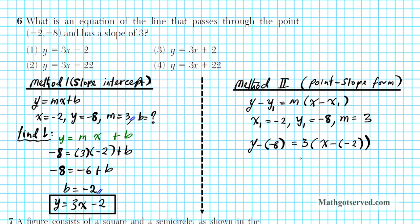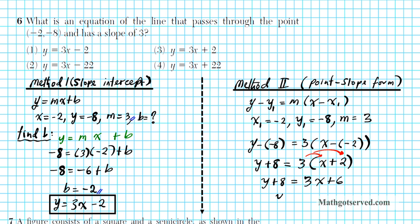Now let's isolate y by resolving the parenthesis. Minus times minus gives plus, so y plus 8 equals 3 times x plus 2. Distribute the 3: y plus 8 equals 3x plus 6. Subtract 8 from both sides: y equals 3x plus 6 minus 8, which is minus 2. And there's the same answer — y equals 3x minus 2 — the slope-intercept form of the line through negative 2, negative 8 with slope 3.